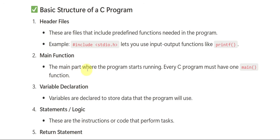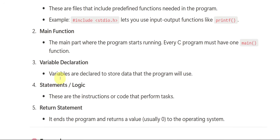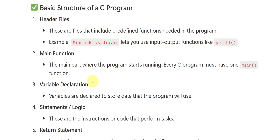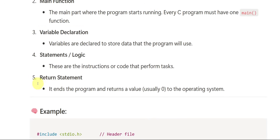Then we have the main function — this is the main part where the program starts running. Every C program must have at least one main function; without main, there is no C program. After the header file comes the main function, then variable declaration — whatever variables we use to store data should be declared after main. Then we have statements or logic — the instructions, commands, or code we write. Then we have the return statement, which returns either 0 or 1.